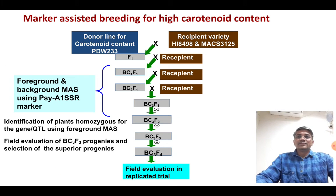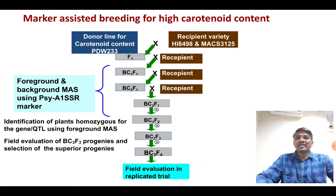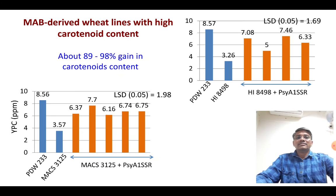This is a schematic presentation of marker-assisted introgression of high carotenoid content in durum wheat varieties. This is the data of marker-assisted derived improved lines showing carotenoid content higher than the recipient varieties.